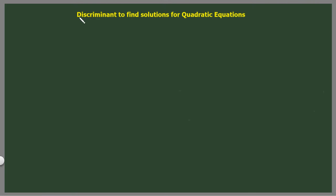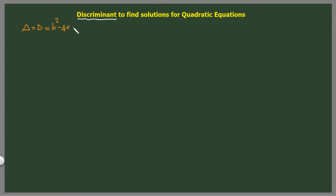What it means is that we're going to use the discriminant right here to state the number and type of solutions we have for the equation we're going to work out. But before starting, I'm going to focus on the discriminant a little bit and give you a couple of pieces of information. The discriminant — some call it delta and some call it d — but it's all the same, and it is equal to b squared minus 4ac.